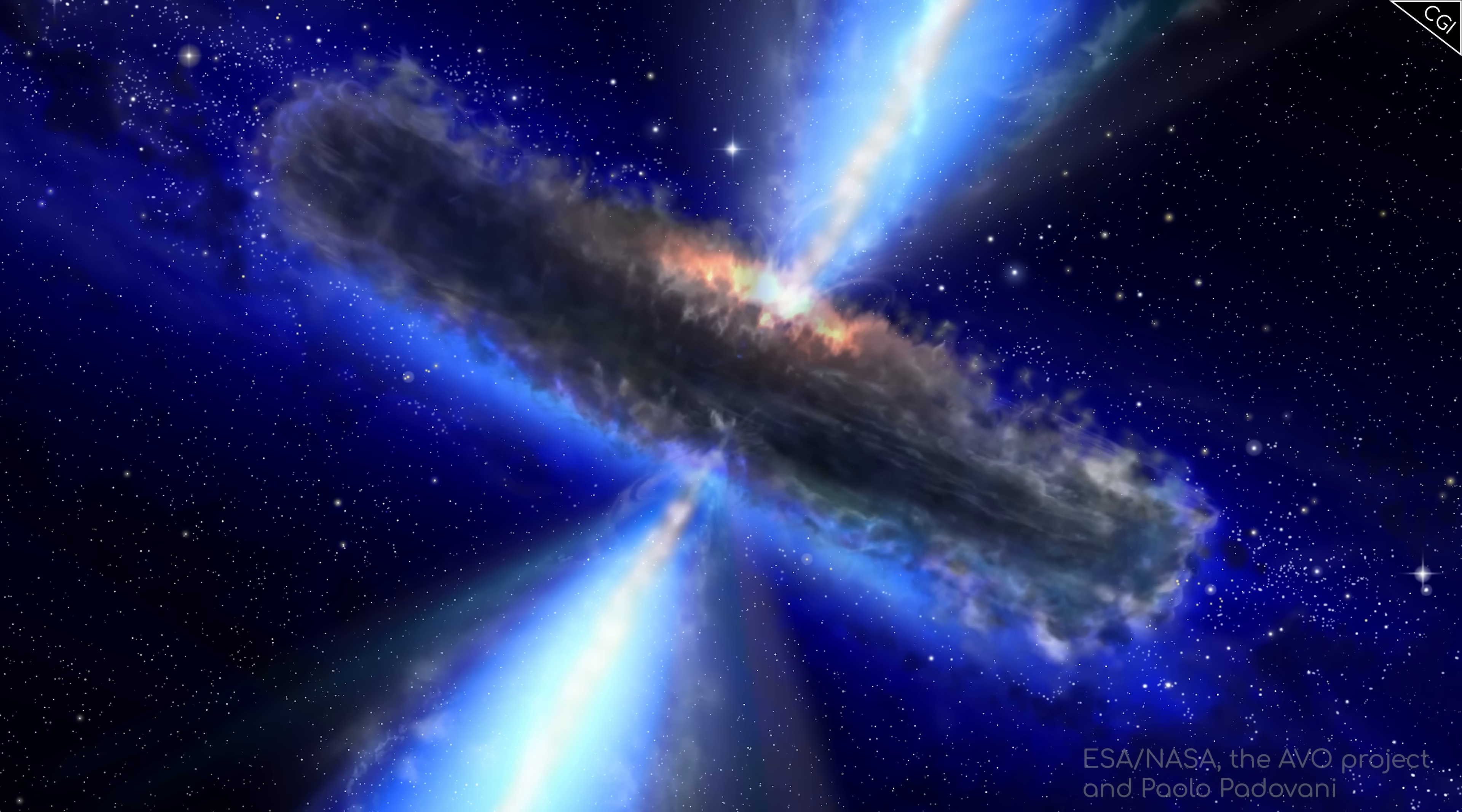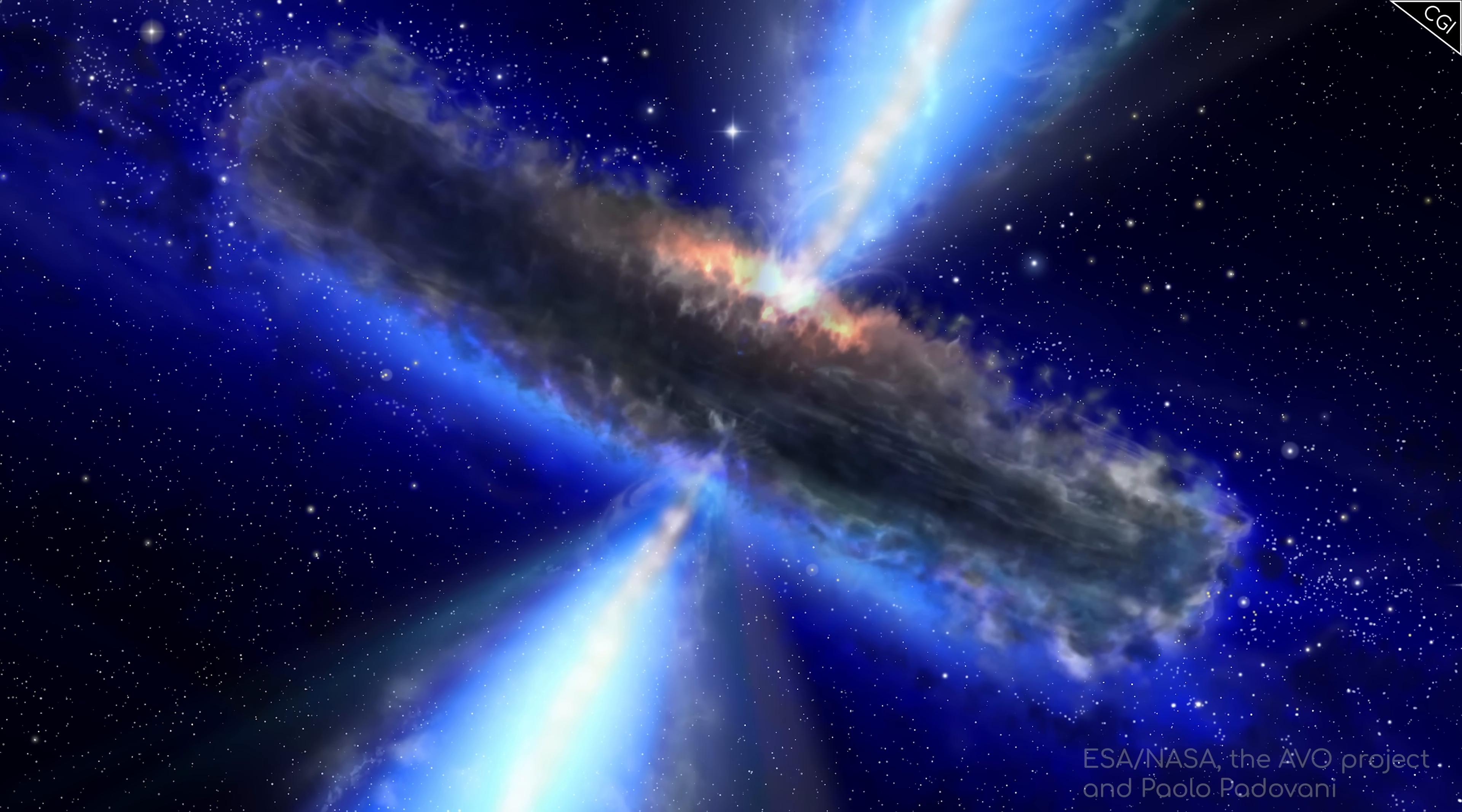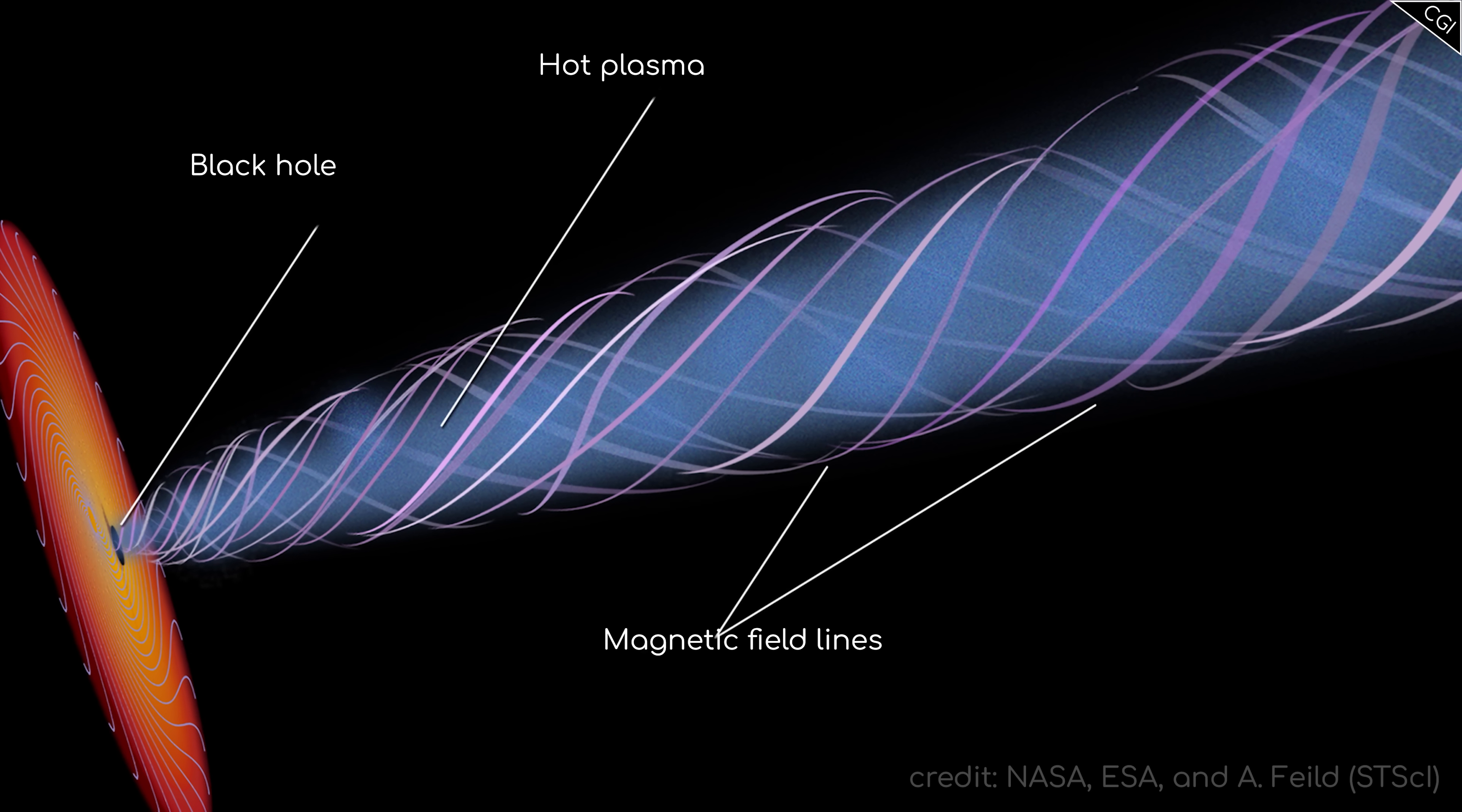It's likely that as the accretion disk spins, magnetic fields form, in keeping with Ampere's law, due to all those moving electrically charged particles. The power and shape of these fields are such that there is only a narrow channel at the north and south poles of the black hole for particles to escape.